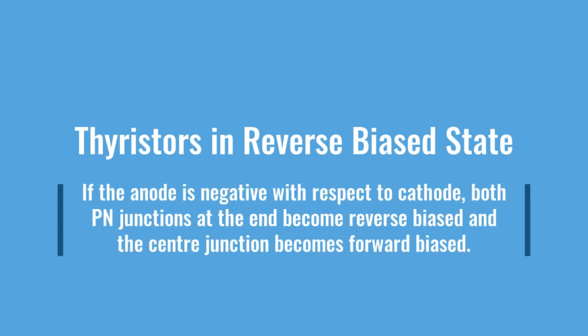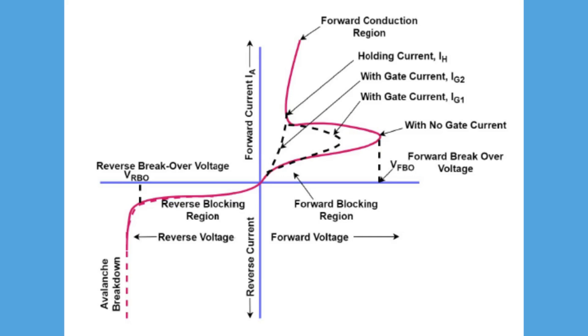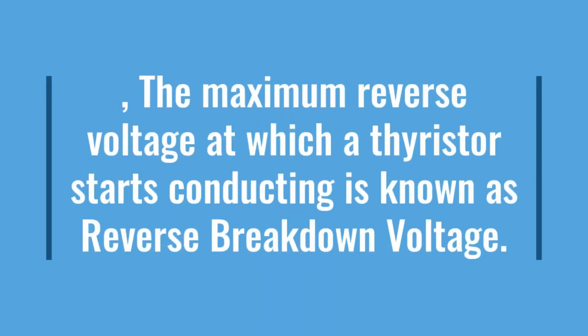In the reverse biased state, if the anode is negative with respect to the cathode — that is, with the application of reverse voltage — both PN junctions at the ends become reverse biased and the center junction becomes forward biased. Only a small leakage current flows through it; this is called the reverse voltage blocking mode or off state of the thyristor. When the reverse voltage is increased further, at a certain voltage avalanche breakdown occurs and the thyristor starts conducting in the reverse direction.